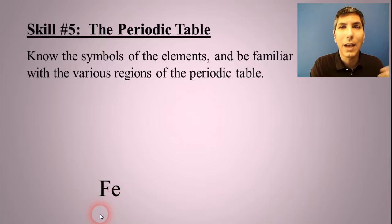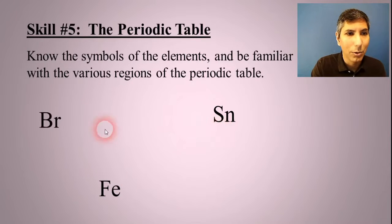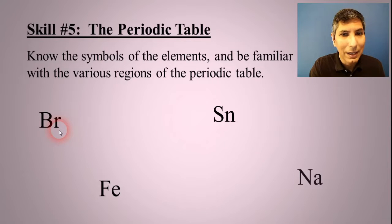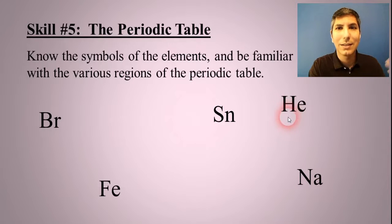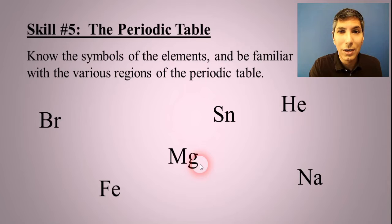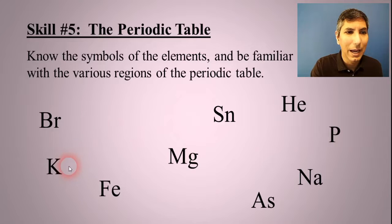Know that Fe, for example, is iron, or that Sn is tin, or Br is for bromine. Na, of course, is sodium. He is helium. Mg would be magnesium. As is arsenic. P would be phosphorus. K is for potassium.